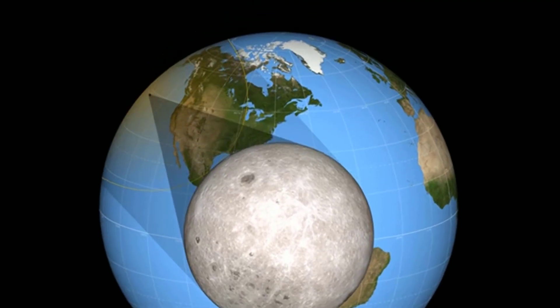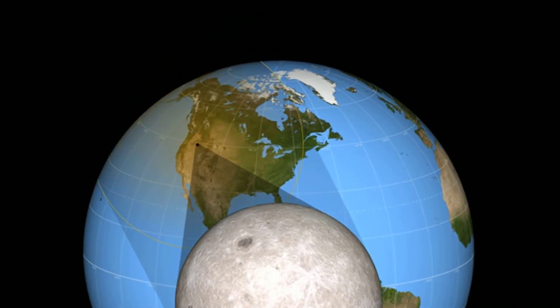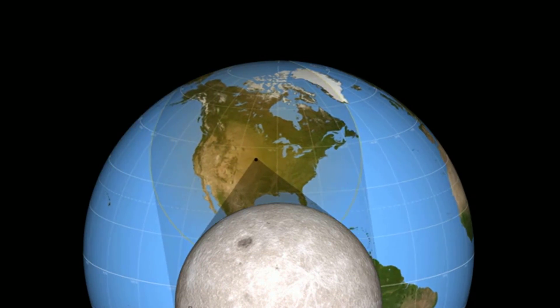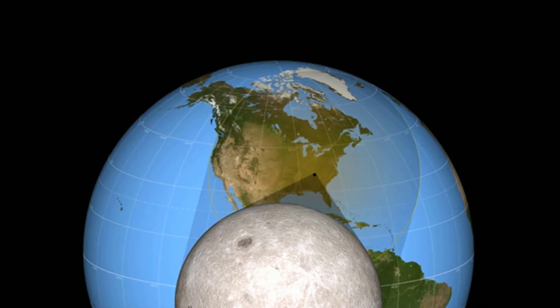This eclipse in particular is quite spectacular because it's the first time since 1918 in which a total solar eclipse has crossed the entire contiguous United States. Solar eclipses happen between two to three times per year on average across the globe, so they're relatively common, but whether or not you can see them from your location is another story.